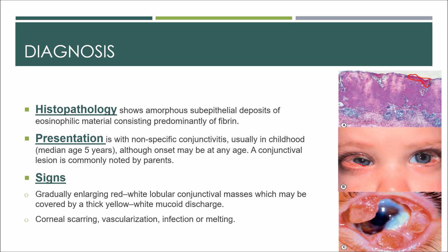There are masses here and in the other eye as well. This zoomed-in picture shows these masses very clearly. They are usually covered by a thick yellow-white mucoid discharge. Corneal scarring, vascularization, infection, or melting may also be a presentation.